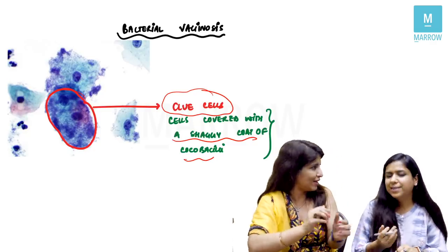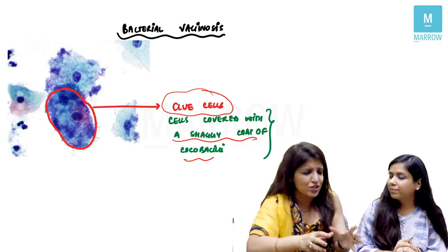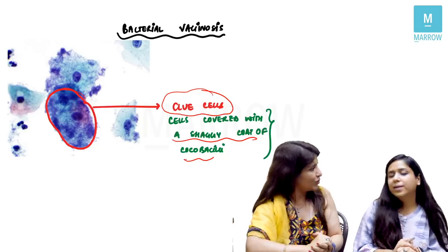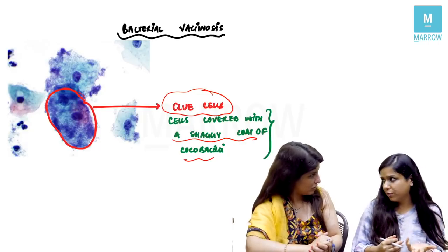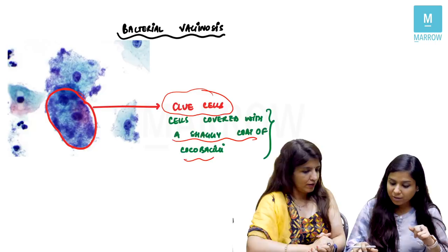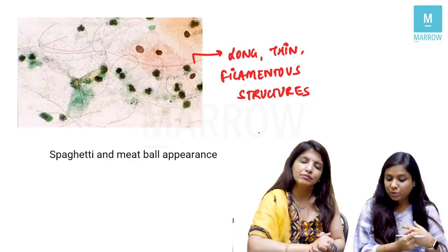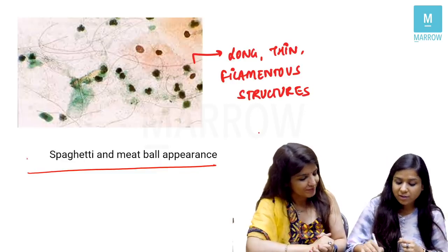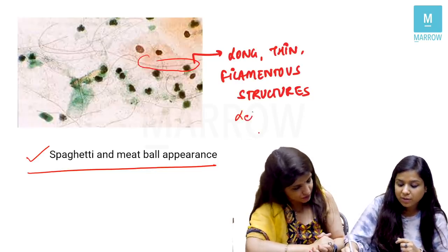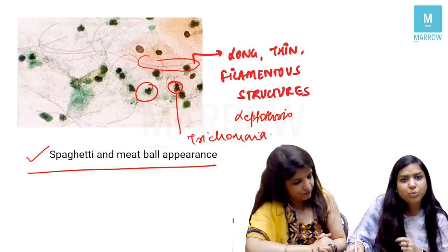In trichomonas vaginitis, many polymorphonuclear leukocytes are seen because it is associated with inflammation. Leptothrix is also commonly associated with trichomonas infection. When trichomonas is present along with leptothrix on PAP smear, the appearance is called 'spaghetti and meatball' — the thin filamentous structures from leptothrix are the spaghetti, while trichomonas organisms represent the meatballs.